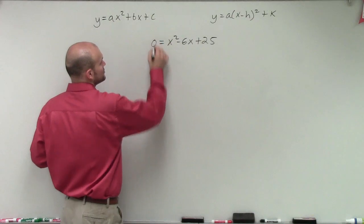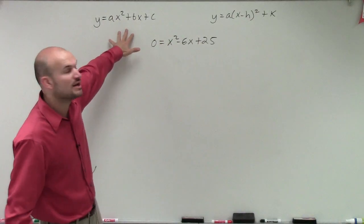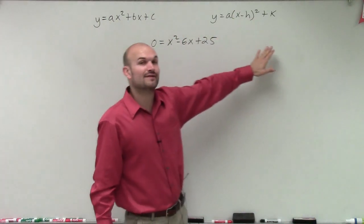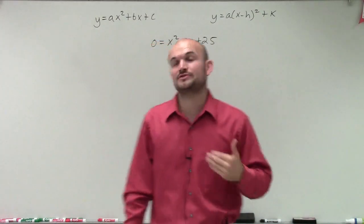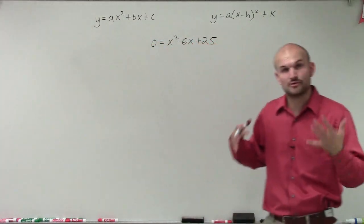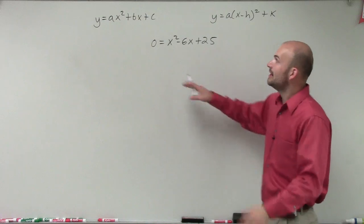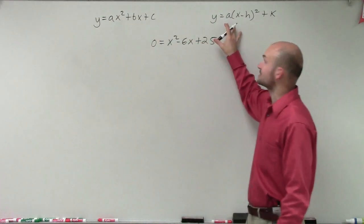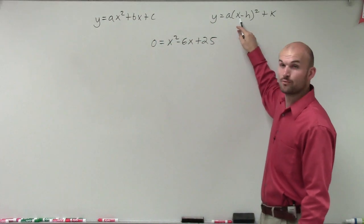Now, by the process of completing the square, what we're going to do is take our equation in standard form and rewrite it in vertex form. The reason why we're going to do that is because we're not going to be factoring, we're going to be solving by completing the square. And one thing you notice from standard form to vertex form, vertex form only has one x.